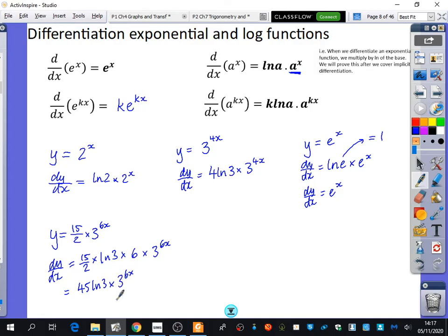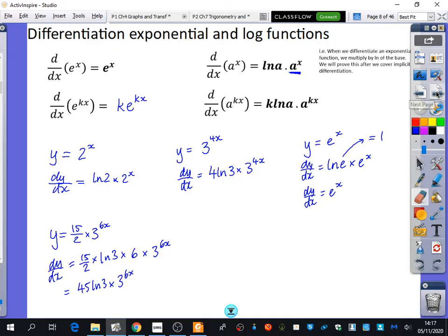And this is like one of the only times we tend to keep multiplication symbols in because they're actually making it clear that there's a multiplication. If I wrote 4 ln 3, 3 to the power of 4x, it's not clear that that's actually been multiplied together. So it's one of the rare times we actually use a multiplication symbol. So now we know how to differentiate e to the power of x and also anything to the power of x. We're going to have a look at differentiating ln functions.